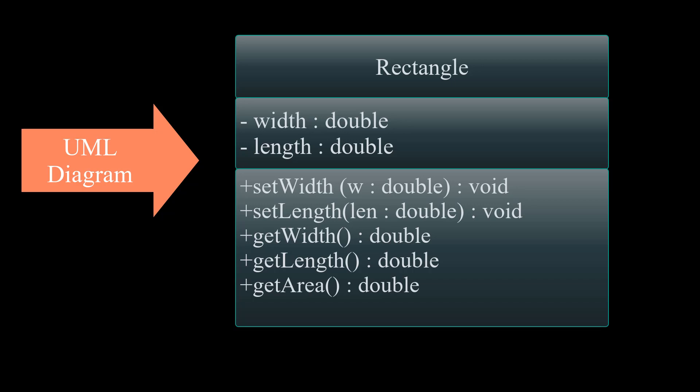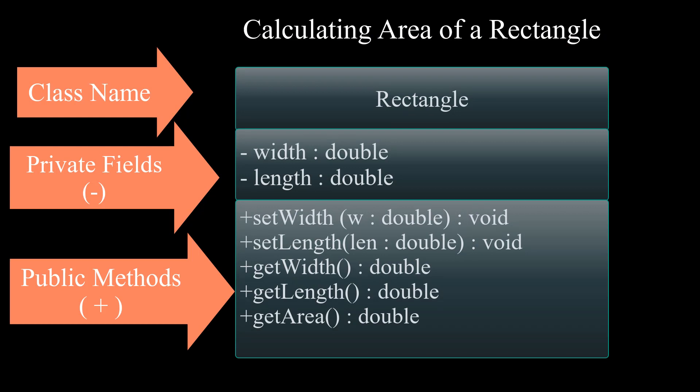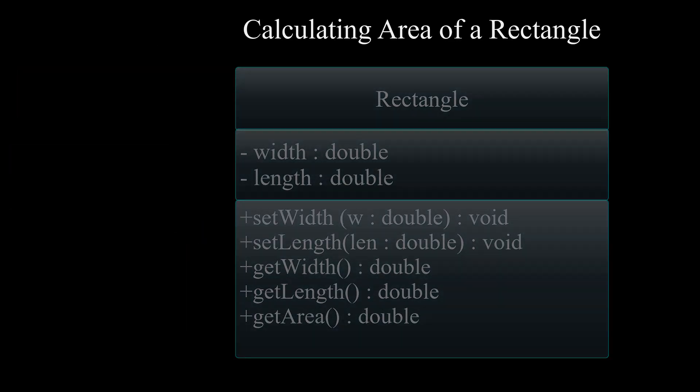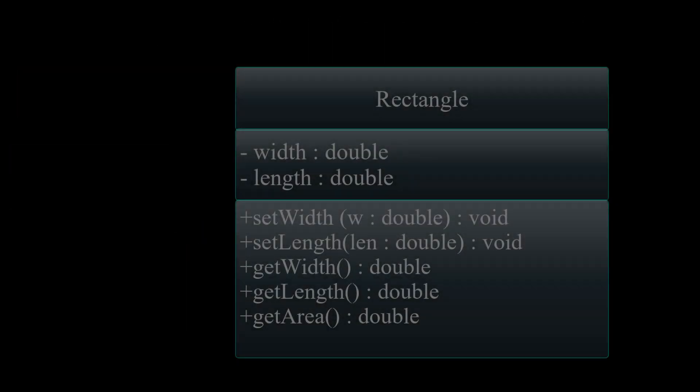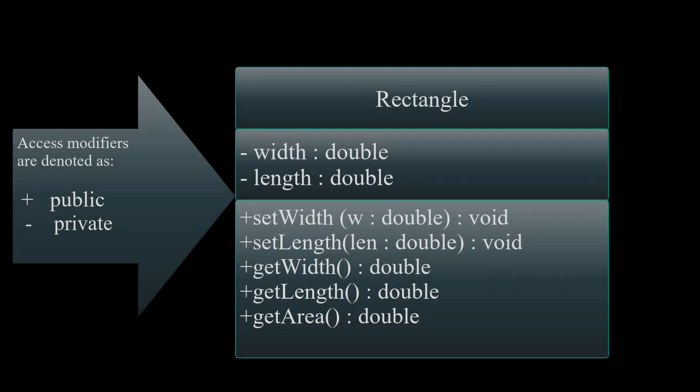For the purpose of this section, let's look at this UML Diagram for a Rectangle class. In this class, we're calculating the area of a Rectangle. The first part of the UML Diagram is the class name, followed by the fields — which are usually set as private — followed by our methods or functions, which are public. The access modifiers are denoted as plus for public and minus for private.